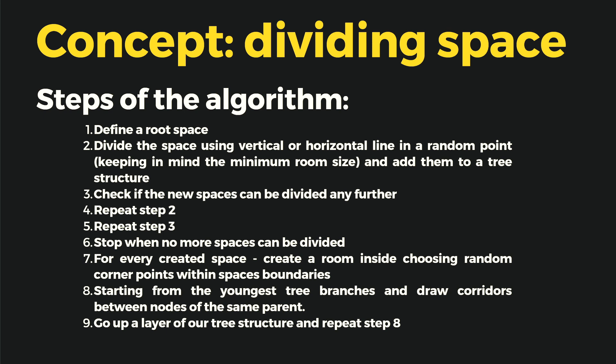Next, we start from the youngest tree branch, so the lowest one with no children, and we construct a corridor between those nodes. Since each parent has only two nodes, we construct those corridors between those nodes.